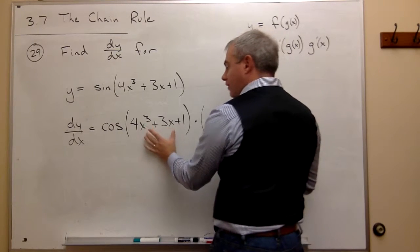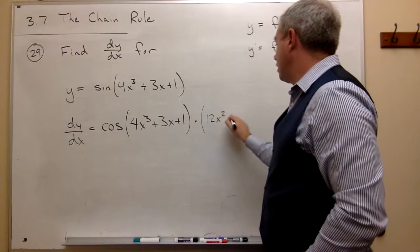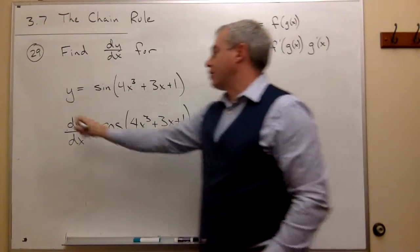So what's the derivative of this inside stuff? Well, it's 12x squared plus 3. And now we have our derivative.